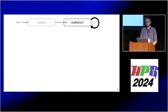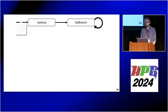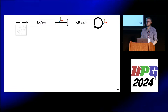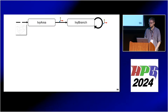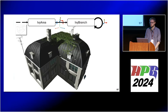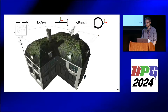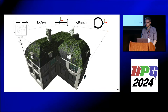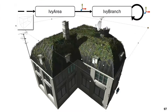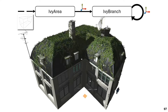Let's add a parent to ivy branch called the ivy area. Ivy area receives a bounding box as a control parameter and outputs a bunch of transformations for ivy branch. Here we want to fill a whole roof with ivy — you can see us dragging around the bounding box and adjusting its scale. The house is also procedurally generated, so we can change its control parameter and the ivy adjusts to it immediately.